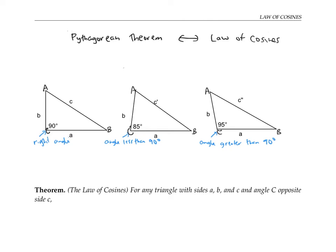Recall that the Pythagorean theorem says that for a right triangle like this one, c squared is equal to a squared plus b squared. I like to think of the law of cosines as a generalization of the Pythagorean theorem to triangles that are not necessarily right triangles.